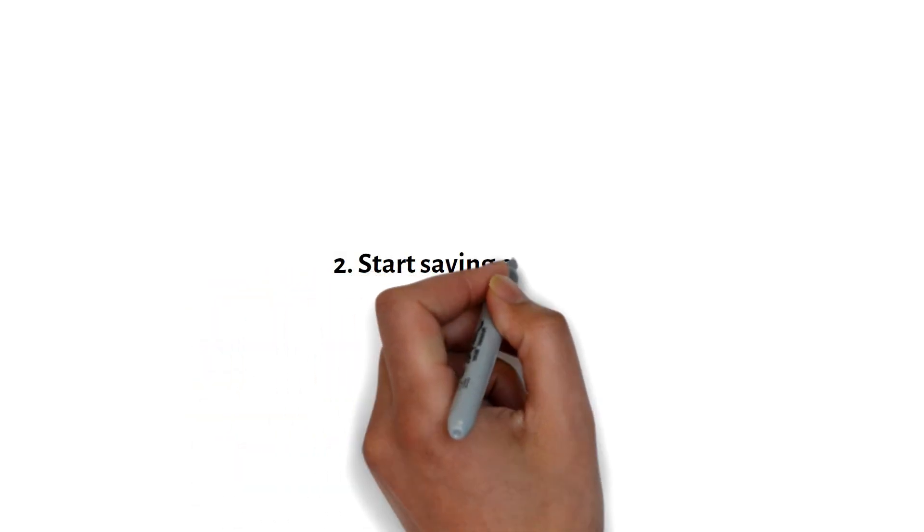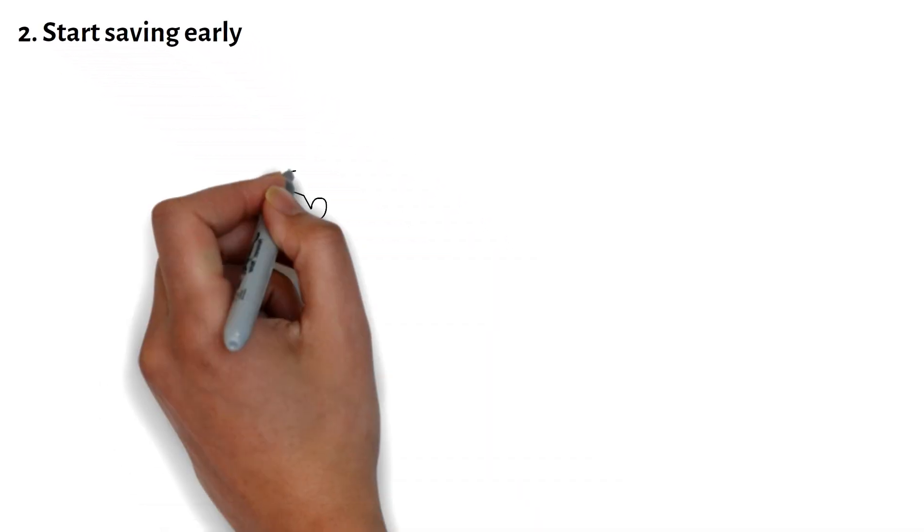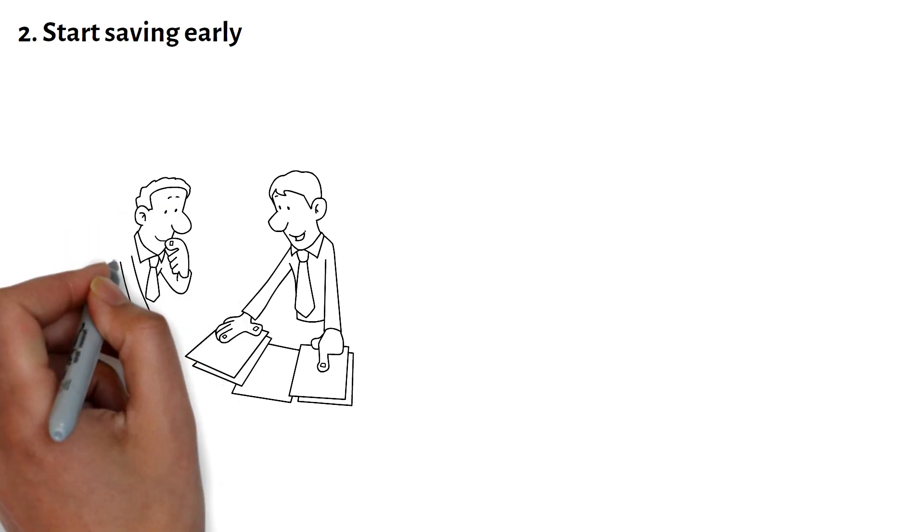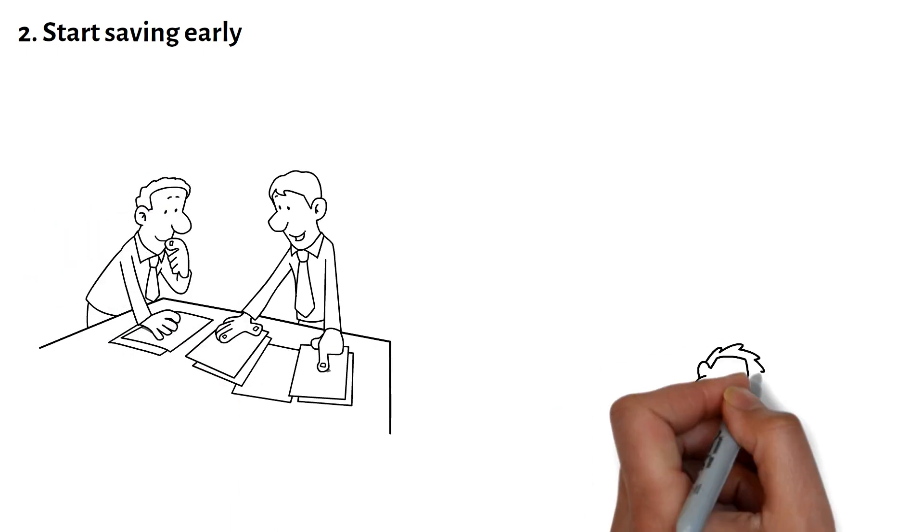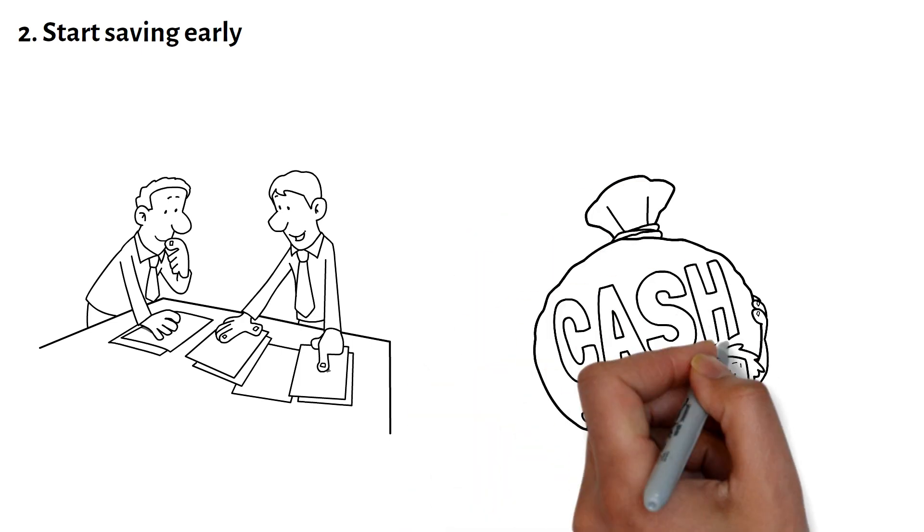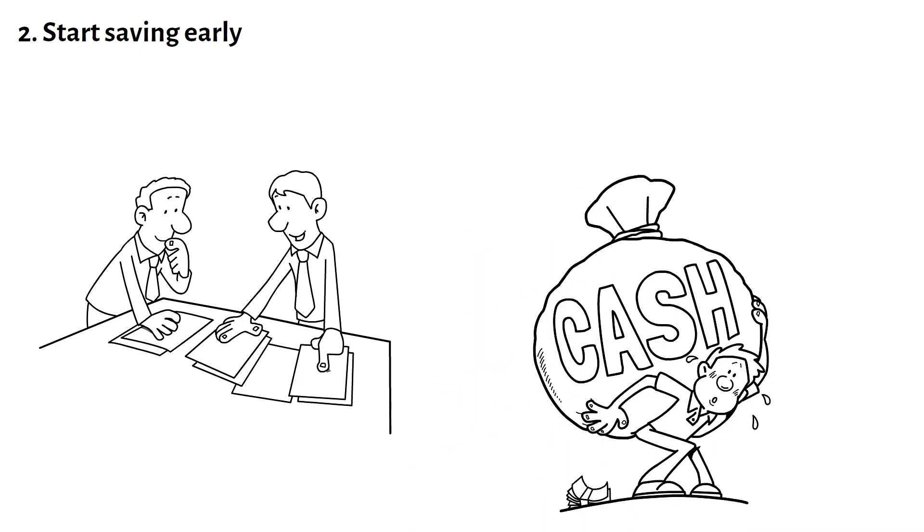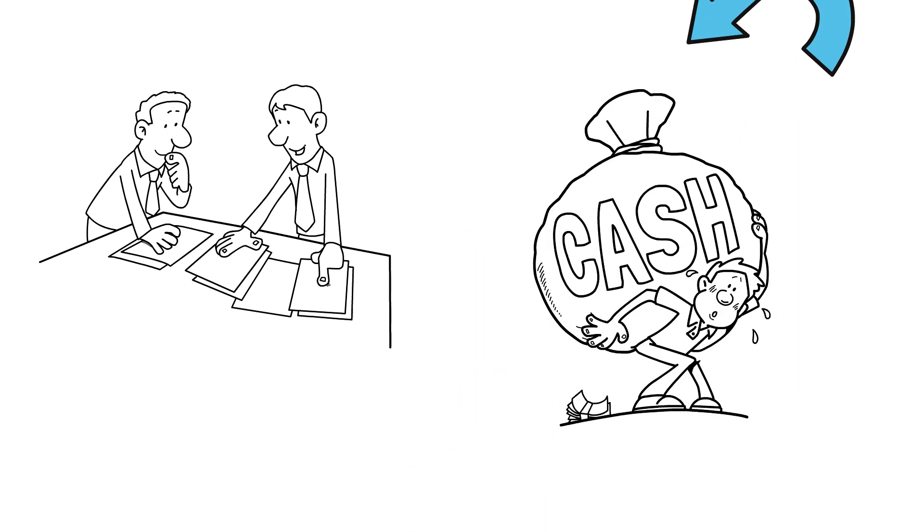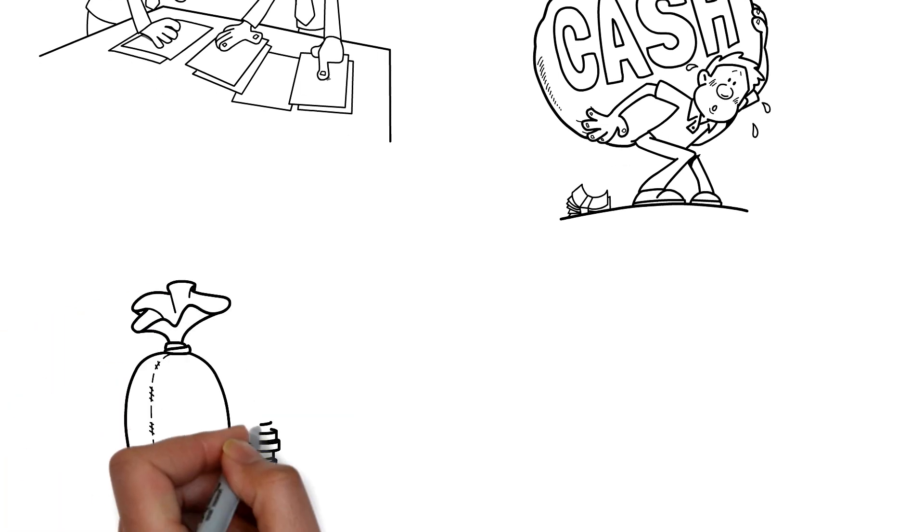2. Start saving early. Saving for retirement is a long-term game, and starting early can make all the difference. The power of compounding interest can turn small savings into significant wealth over time. The sooner you start saving, the more time you give your money to grow and multiply.